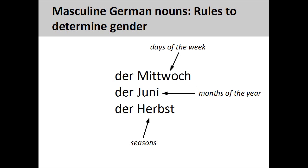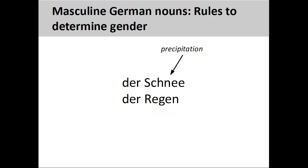Days of the week, such as 'Mittwoch' (Wednesday), and months of the year, such as 'Juni' (June), are masculine. Most seasons are masculine nouns — 'Herbst' (fall), for example. Forms of precipitation, such as 'Schnee' (snow) and 'Regen' (rain), are masculine nouns.